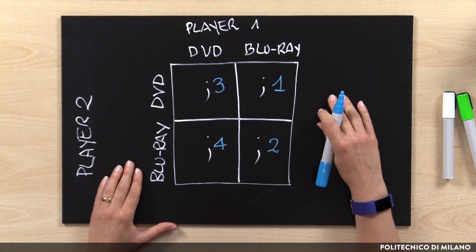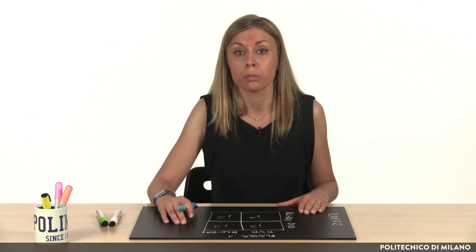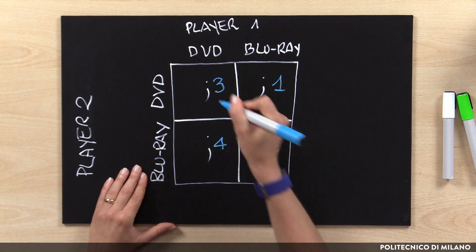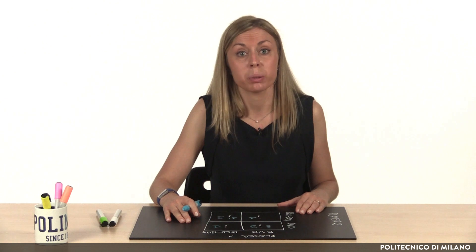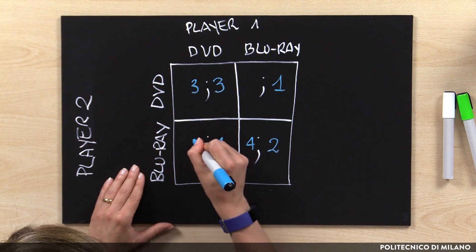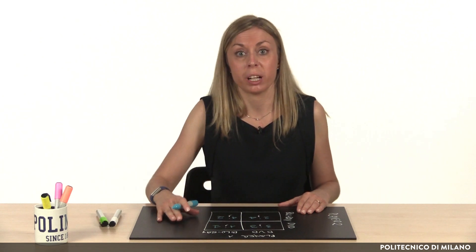We also need to understand the preference ordering for Player 2. For example, we could expect that Player 2 is looking for standard consensus, preferably on Blu-ray, but also acceptable on DVD. Player 2 thinks it is better to converge towards a single standard to minimize investments and costs, rather than competing on separate standards. We assign payoffs to Player 2 considering this view. Now we have our full payoff matrix.